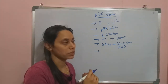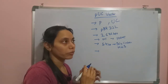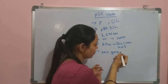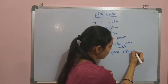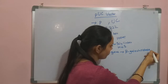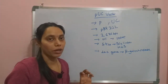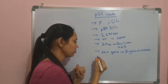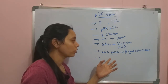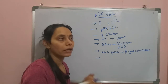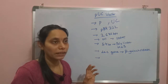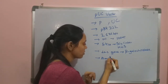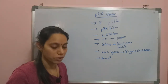The major selectable marker in PUC vector is the beta-galactosidase coding lac Z gene. This lac Z gene codes for the enzyme called beta-galactosidase. It gives visual identification of transformed and non-transformed cells. The gene of interest is inserted into the beta-galactosidase-producing lac Z gene, so that transformed cells are selected. This method is popularly known as blue-white screening. There are also other genes like ampicillin resistance genes.